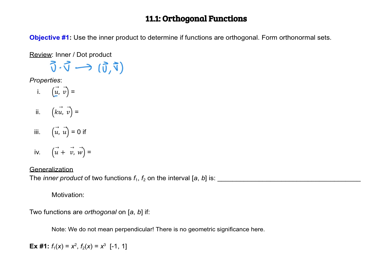A few different properties. If we have u dot v, that's the same as v dotted with u. If we have some constant k multiplied by our vector u, we can bring that out and find the dot product first and then multiply by k. If we have a vector and we dot it with itself and we get zero, that's only going to happen if that vector u is the zero vector. Otherwise, that dot product is going to be greater than zero. And then lastly, if we have u add v and we're dotting that with w, we can also calculate that as u dotted with w add v dotted with w.